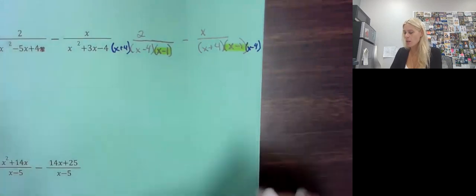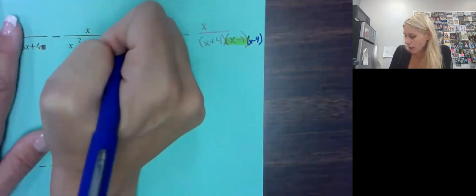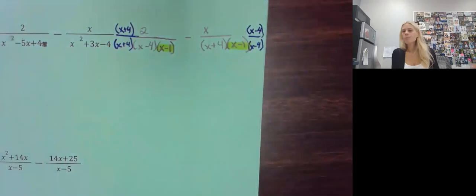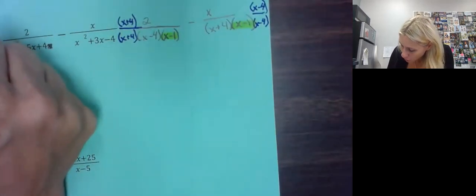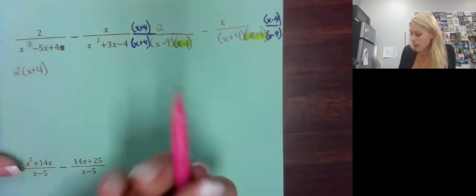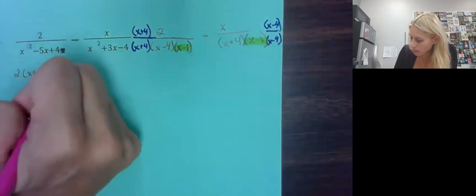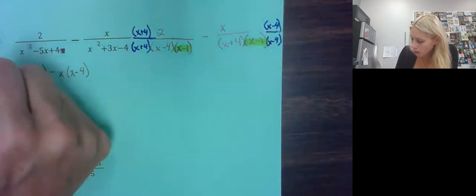Now they look the same: (x plus four)(x minus four)(x minus one). Whatever we do to the bottom we do to the top. Put it together under the common denominator: two times (x plus four), minus — distributing that negative x to the two terms — negative x times (x minus four), all over that common denominator.